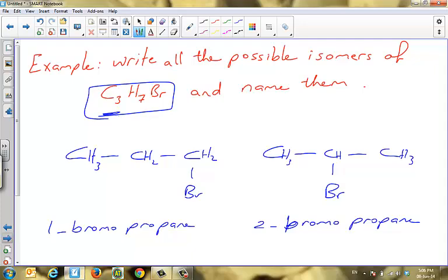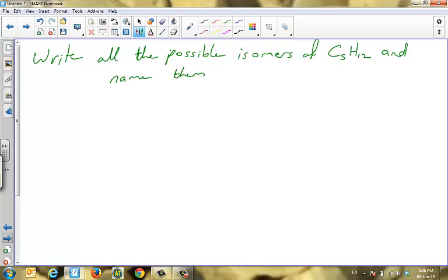So for this one we have only two possible cases or we call them two isomers. Let us have another example. Imagine that we have this one: write all the possible isomers for C5H12 and name them. The first one I start with five carbon atoms in sequence like this. Let me complete the H's. CH3, CH2, CH2, CH2, and CH3. And this one is called pentane.